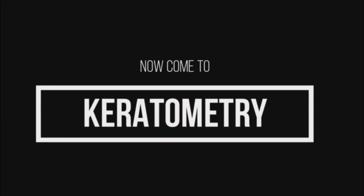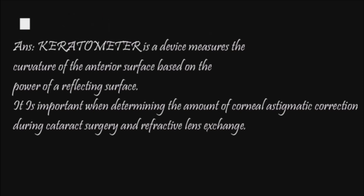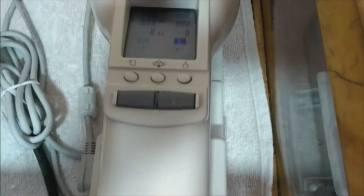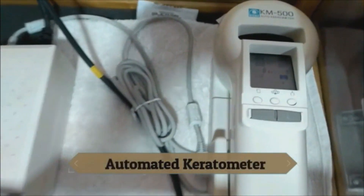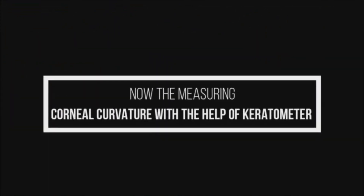Now let's move on to keratometry. Here we use a device named keratometer, also known as an ophthalmometer, which is a diagnostic instrument used for measuring the curvature of the anterior surface of the cornea. Let's watch a video clip where we have used an automated keratometer to measure the corneal curvature and the axis of astigmatism.